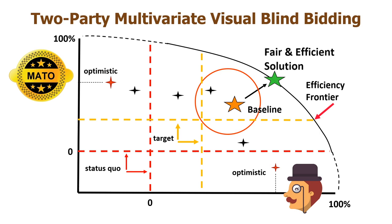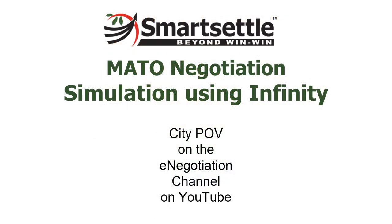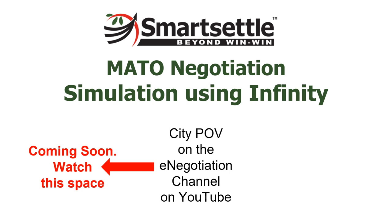If there were three parties in the negotiation, the efficiency frontier would look like a surface. SmartSettle's multivariate visual blind bidding has no theoretical limit to the number of parties or issues that can be supported, and the process is no more difficult for each individual party than what we've demonstrated in this video. All they need to do is focus on their own preferences, and SmartSettle will look after the rest. Be sure to watch the companion video that shows this simulation from the City's point of view. Thanks for watching.